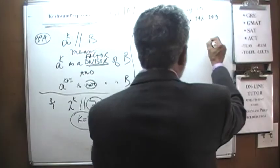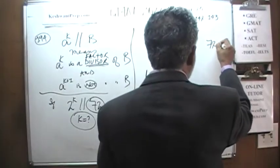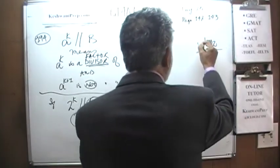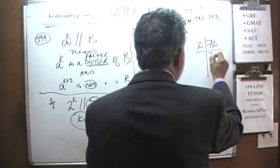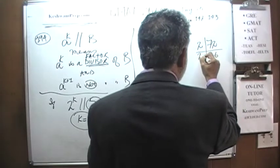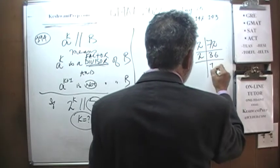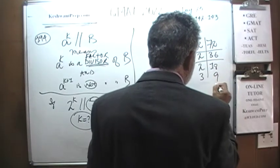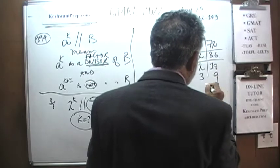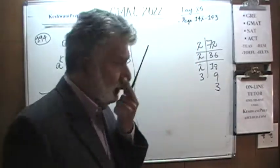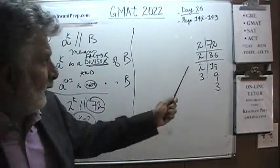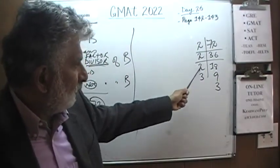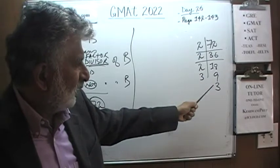Let's do the prime factorization here. Since 72 is an even number, let's start with 2: that gives 36. 36 divided by 2 is 18. 18 divided by 2 is 9, and 9 factors into 3 times 3. In other words, 72 equals 2 times 2 times 2 times 3 times 3.